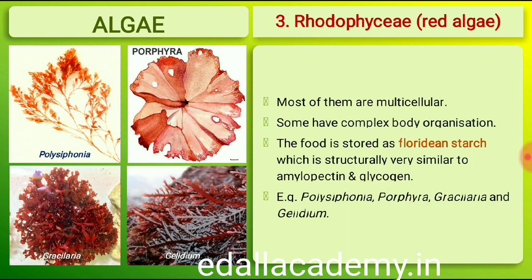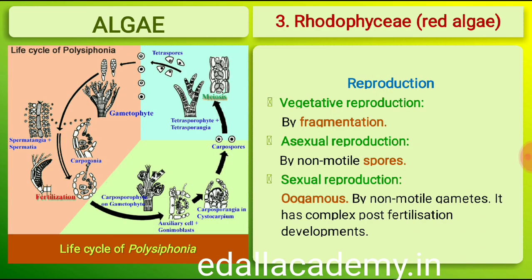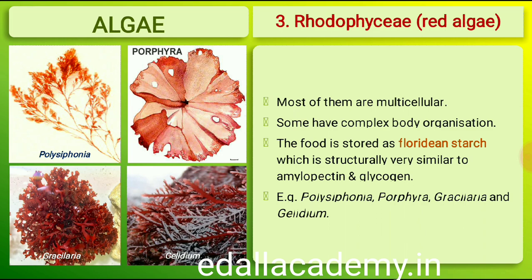The food is stored as floridean starch, which is very similar to amylopectin and glycogen in structure. Red algae usually reproduce vegetatively by fragmentation. They reproduce asexually by non-motile spores and sexually by non-motile gametes. Sexual reproduction is oogamous and accompanied by complex post-fertilization developments. The common members are Polysiphonia, Porphyra, Gracilaria and Gelidium.